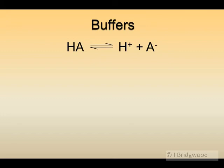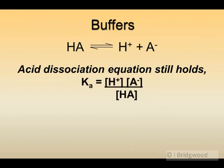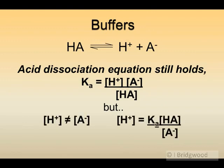Here we have our equilibrium, and don't forget — even in buffer solutions, this equilibrium still holds. However, the concentration of H+ and the concentration of A- are not equal as they are with a pure weak acid solution. If we want to use this in calculations, it's very simple to rearrange the equation. Make sure you learn how to rearrange it rather than relying on the formula: concentration of H+ equals Ka times concentration of HA over concentration of A-. That is the equation you will tend to use in buffer solution calculations.